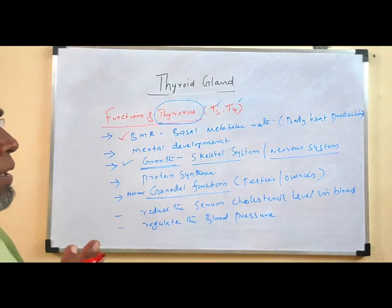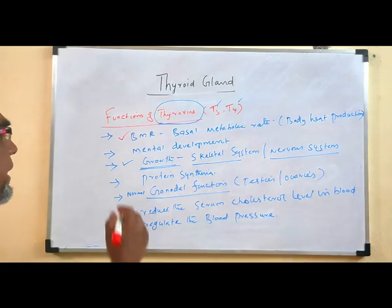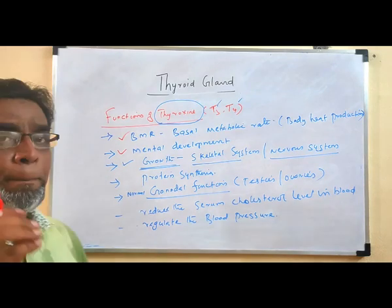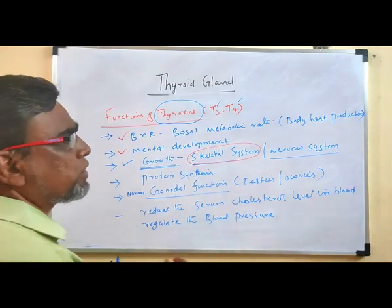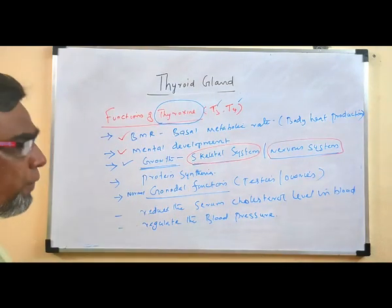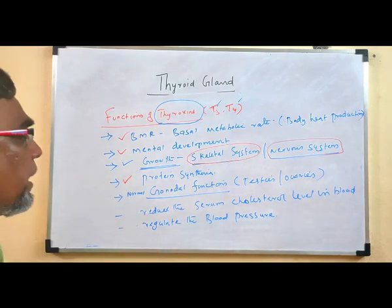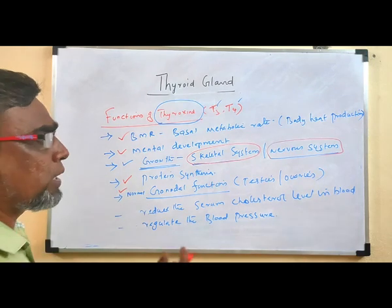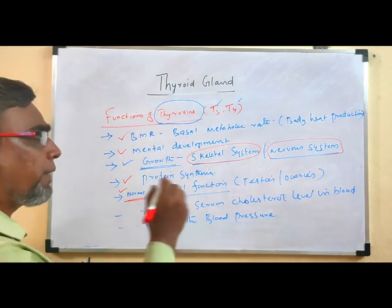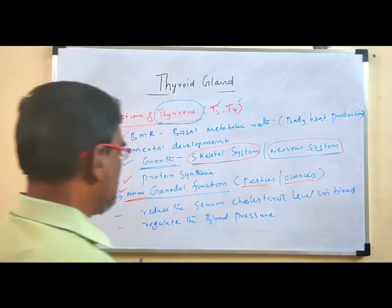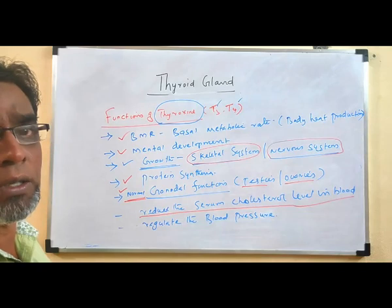Thyroxine produces body heat and is essential for various physical activities of the body. It is highly essential for mental development, especially the growth of the skeletal system and the nervous system. It helps for protein synthesis in the body. Normal gonadal function is also enhanced by this hormone — it is very important for normal gonadal function, especially the testes and ovaries. It also reduces the serum cholesterol level in the blood.